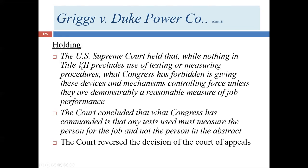While nothing in Title VII precludes the use of tests or measuring procedures — and requiring a high school diploma would be a measuring procedure — what Congress has forbidden is giving these devices controlling force unless they are demonstrably a reasonable measure of job performance. The onus is on the employer to show that the requirement really is necessary and does impact job performance.